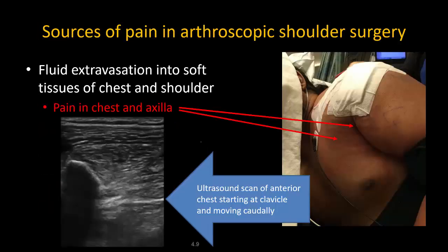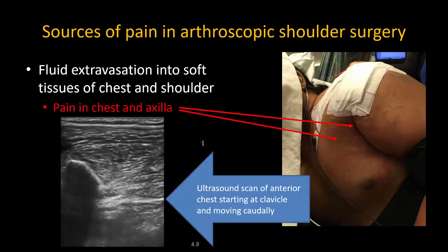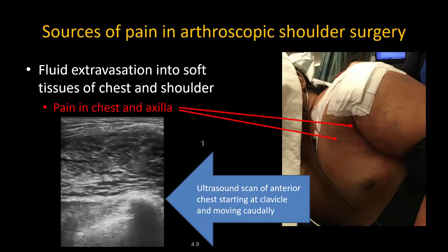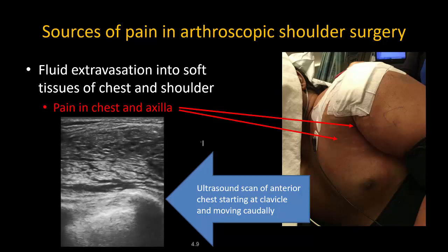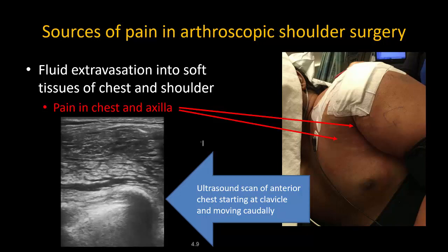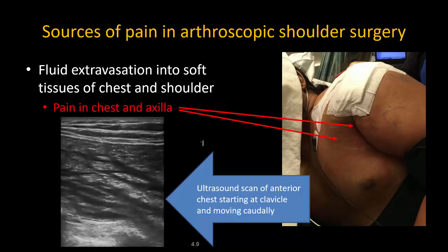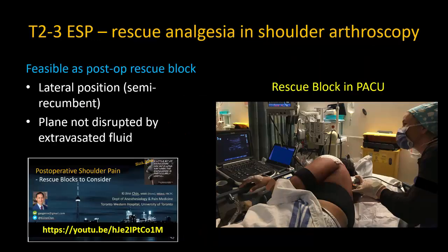Turning to arthroscopic shoulder surgery, extensive fluid extravasation into the tissues of the chest and shoulder after prolonged and complex surgery is common. You can see from this ultrasound scan how the pectoral muscles are full of fluid. This can be associated with severe pain over the anterior and posterior shoulder, chest, and into the axilla, despite a working C5-6 root block. A high thoracic T2 or T3 ESP block invariably improves the pain and is easily accomplished as the site of injection is not involved by fluid.